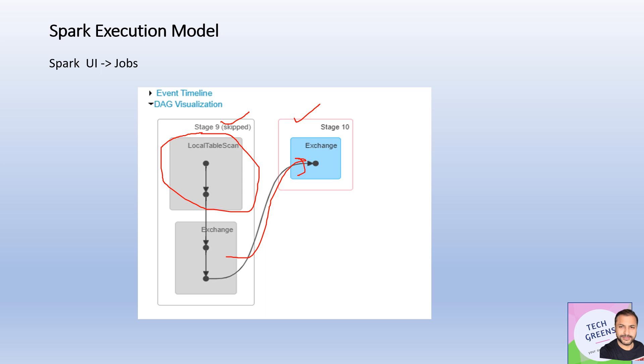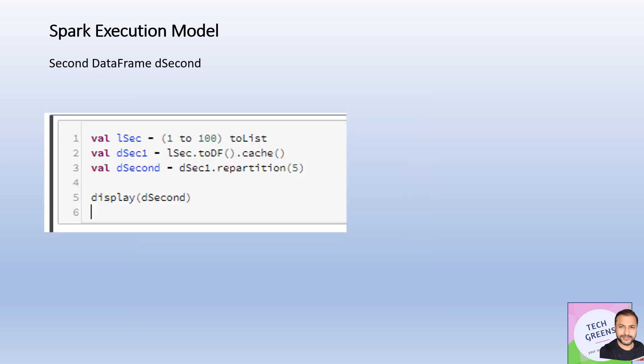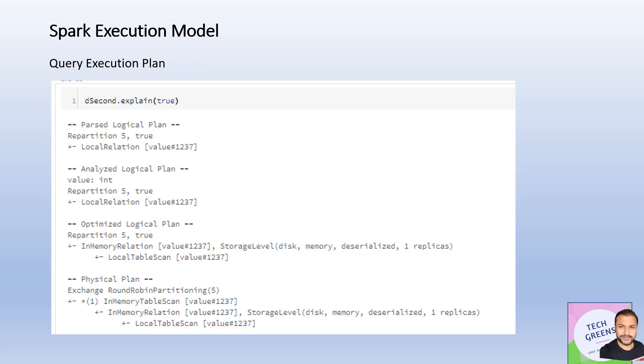Now let's twist the job. I've added `.cache()` to the example — the change I made. I'm doing the same repartitioning, but the DataFrame created for 1,200 integer values now has a cache called on it before the repartitioning. Let's see how things change in the execution model. If I check the explained plan now, the parsed logical plan and analyzed logical plan remain the same.